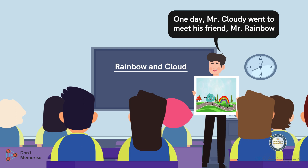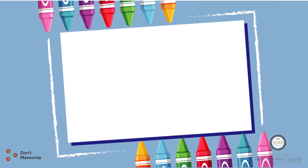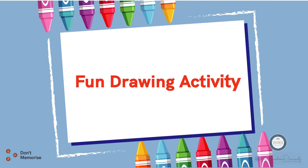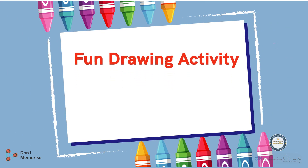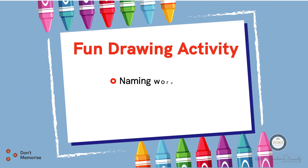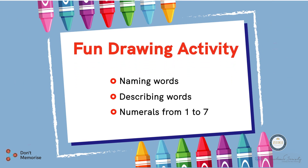Moving on, we will continue the story by asking the students a few leading questions based on the picture composition. This is the time to engage them in a fun drawing activity. Through these interactions and hands-on activity, we will be covering the concepts of naming words, describing words, and numerals from 1 to 7.